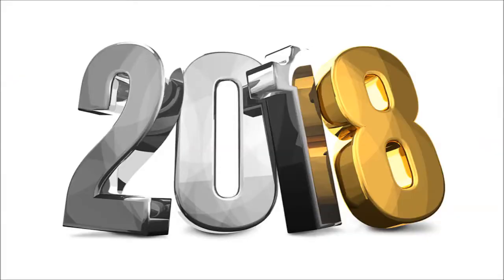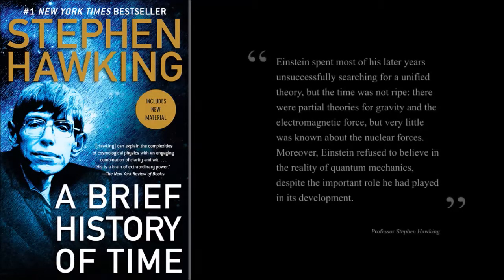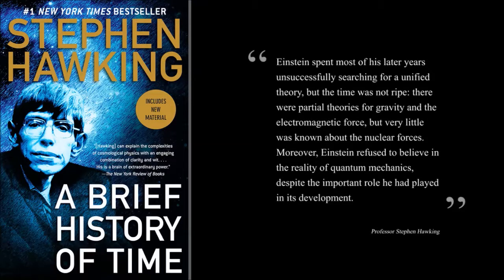Research theory has been found in Stephen Hawking's best-selling book, A Brief History of Time. He states: Einstein spent most of his later years unsuccessfully searching for a unified theory, but the time was not right. There were partial theories for gravity and the electromagnetic force, but very little was known about the nuclear forces. Moreover, Einstein refused to believe in the reality of quantum mechanics, despite the important role he had played in its development.